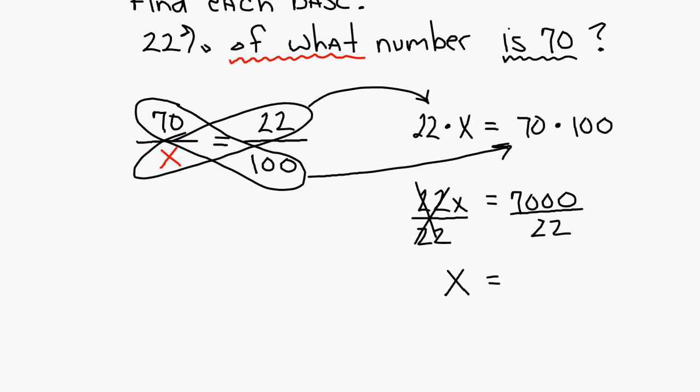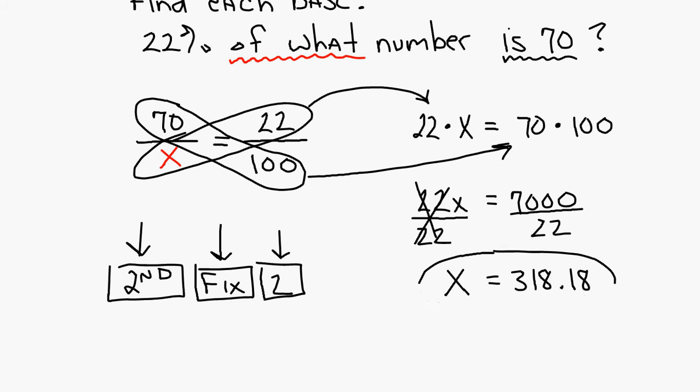The 22s will cancel, and x equals 7,000 divided by 22. Set your calculators to 2nd, fix, 2. Push those three buttons: 2nd, fix, 2. That's the green button. Fix is the period button on the bottom and the middle, and 2 is the number 2, so that all of us will have the same answer. I have 318.18.